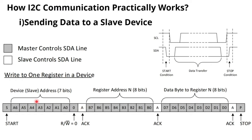After the slave acknowledges the device address, we send the 8-bit register address — specifying where we want to write the data. The slave again responds with an acknowledgement. Then we send the actual data byte (D0 to D7). The slave acknowledges again. We can send as many bytes as desired; the slave auto-increments the register address. When the master is done, the slave responds with a negative acknowledgement to stop further communication.